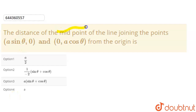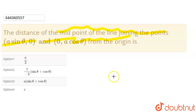Today's question is: what is the distance of the midpoint of the line joining the points (a sinθ, 0) and (0, a cosθ) from the origin?